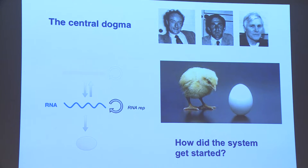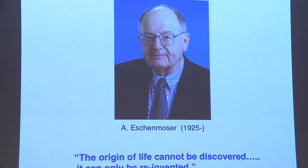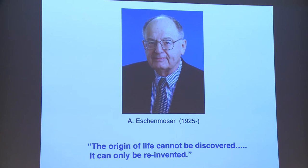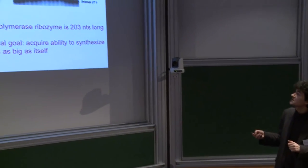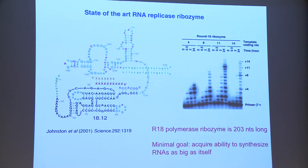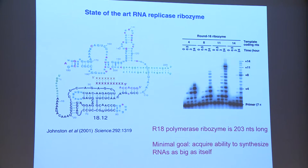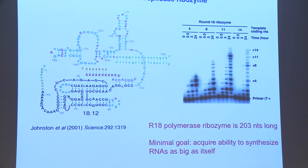Since it hasn't been found in biology, we decided to build such a replicase from scratch, true to the dictum of my former teacher Albert Eschenmoser: the origin of life cannot be discovered, it can only be reinvented. Our starting point is this amazing ribozyme discovered in David Bartel's lab at the Whitehead Institute — an RNA polymerase ribozyme. It can read out a sequence on an RNA template and synthesize its complement, going to about 14 incorporations in 24 hours.